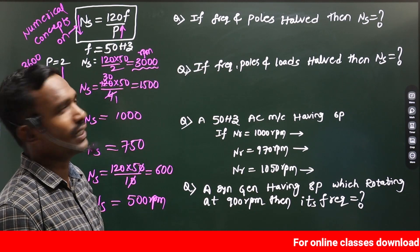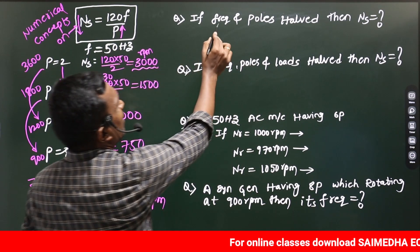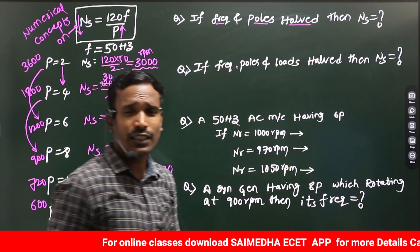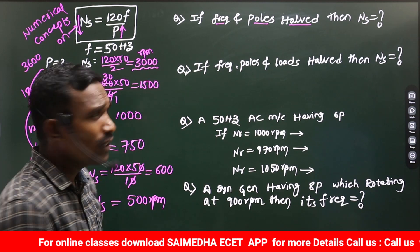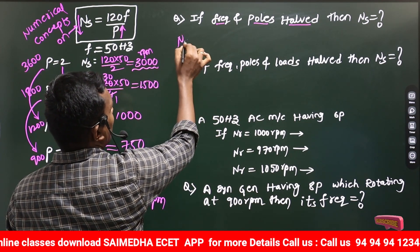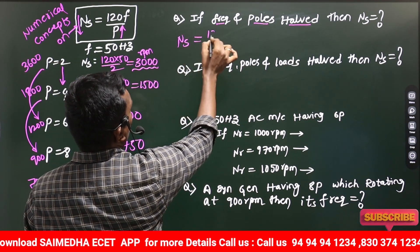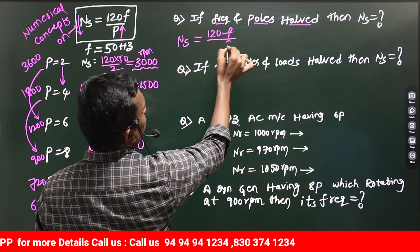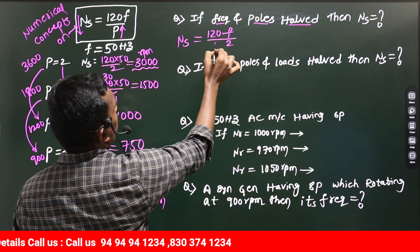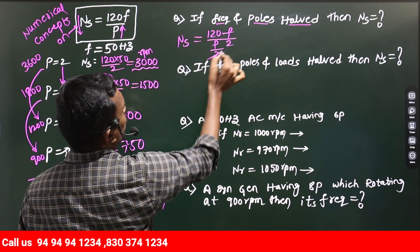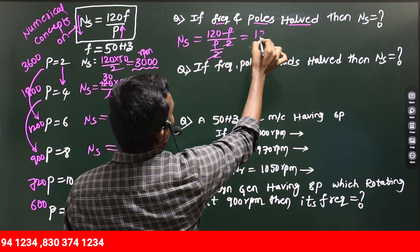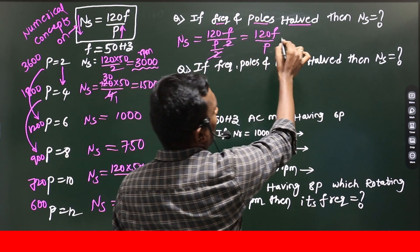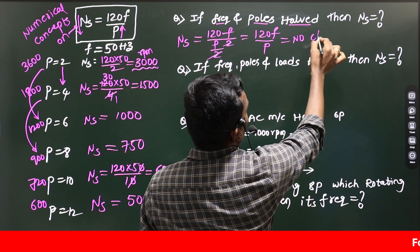Then after, for example, they will ask you a question like this. If frequency and number of poles halved, then the synchronous speed will be. What will be the synchronous speed formula? NS equals 120F, frequency halved, F by 2. And number of poles also halved, P by 2. 2, 2 cancel. Again, 120F by P. So if the frequency and number of poles halved, the synchronous speed no change.